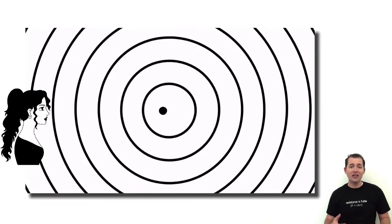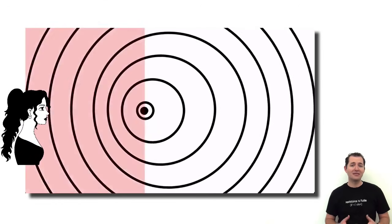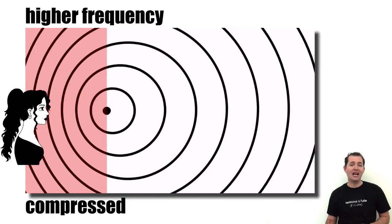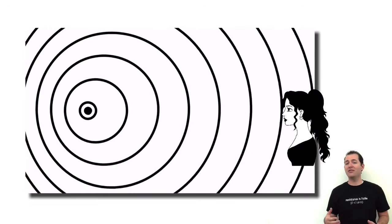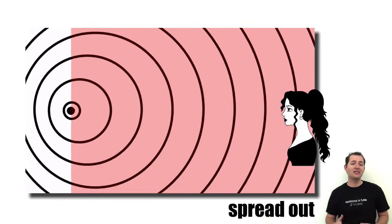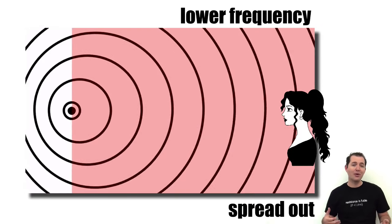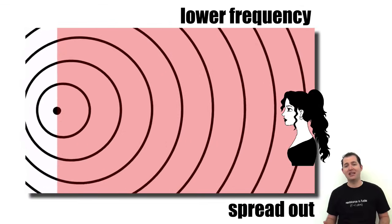When our observer is in front of this moving object and the object is moving towards the observer, the waves are bunched up and they represent a higher frequency. But when the observer is behind the object and the object is moving away, those waves are more spread out, but they represent a lower frequency than when the object is stationary.